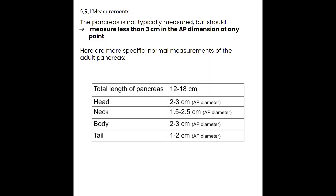As far as measuring the pancreas, we don't typically measure the pancreas, but if it looks edematous and you want to measure it, you should find that the measurements are less than three centimeters in the AP dimension at any point. The head and the body are the thickest parts. We don't typically measure the total length of the pancreas, but if you wanted to, it's typically in the 12 to 18 centimeter range.